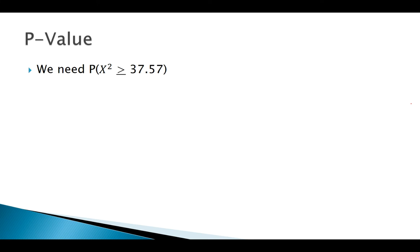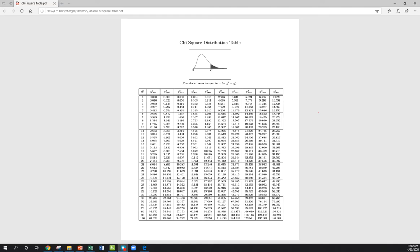Now we need to figure out our degrees of freedom. Remember we had a three by two table, so our degrees of freedom comes out to be two. Looking at my table at two degrees of freedom, my test statistic was 37.57, so here's 10.597. It's definitely greater than this, so we estimate our p-value is very, very small.